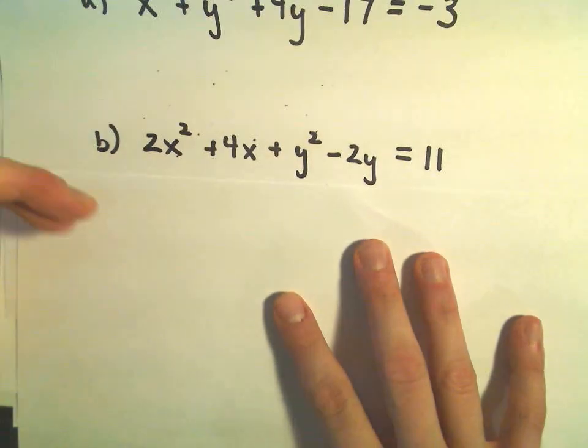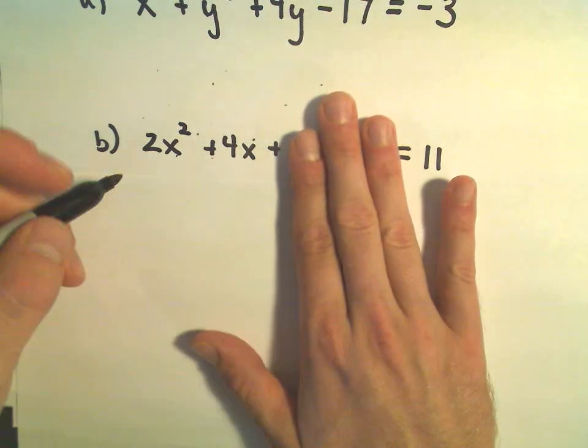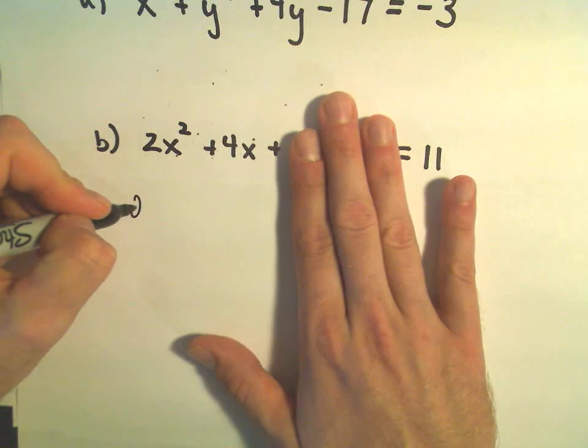I'm going to do the same thing. I'm just going to complete the square. The first thing I'm going to do on my x's is I'm going to factor out the 2, the coefficient on the x squared.